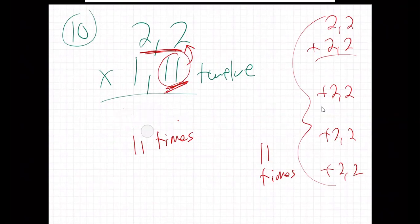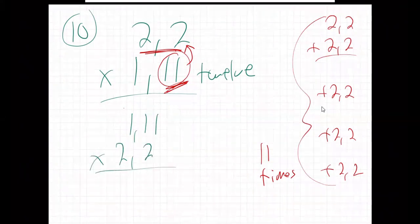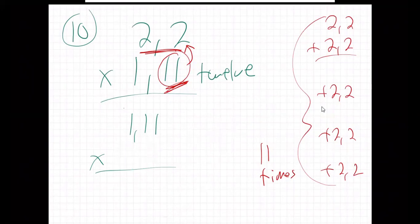I don't want to add 2,2 eleven times. Do you see what I can do instead? What if I switch the order like that? You know the order of multiplying doesn't matter, right? 3 times 4, 4 times 3, you know, it doesn't, it never matters what order we multiply things in. You know that it can be switched. So what if I switch the order? Would that be easier? Yeah. I only need to multiply 111 two times. I only need to add them two times.